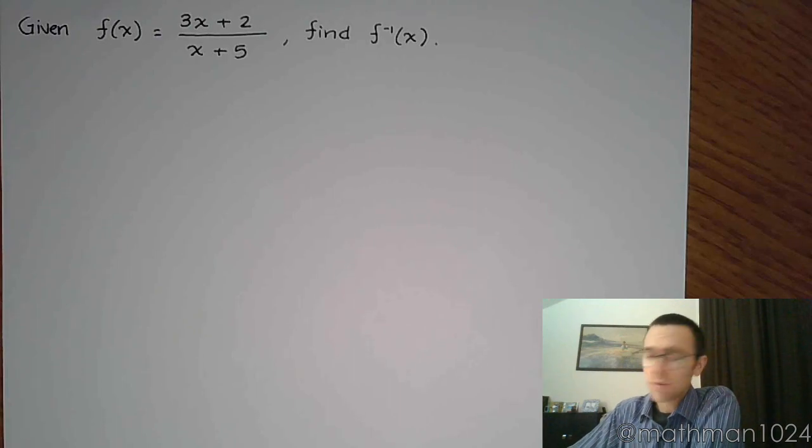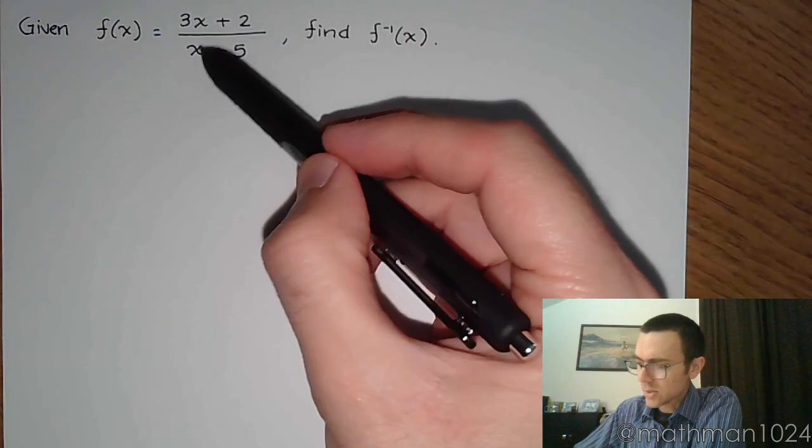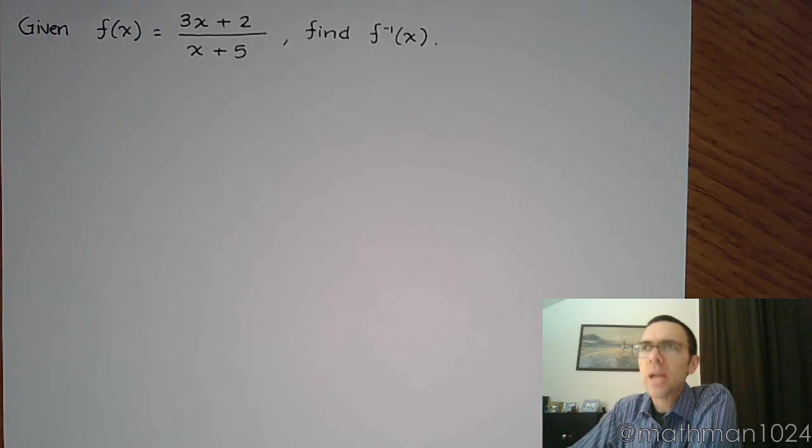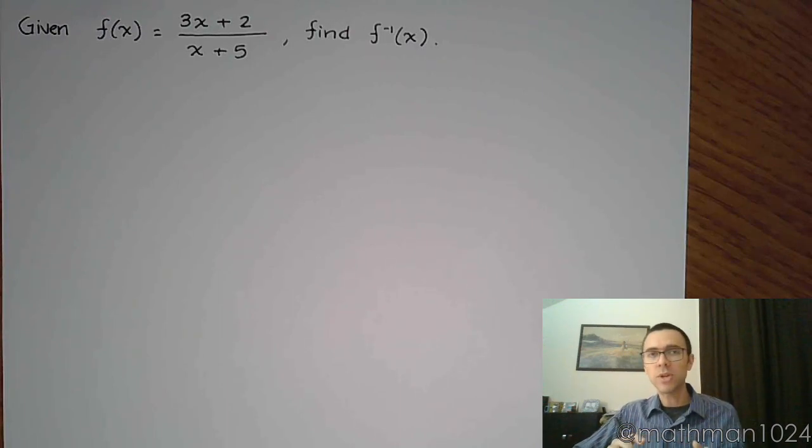But notice that we have two different instances of x. So since we have that situation, this is not going to be one of those problems where we can do that order of operations and go backwards, because there's too much going on here. So we are going to have to go through the algebraic process step by step very carefully in order to find the inverse.